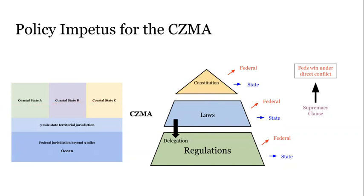It is possible for the federal government to cajole — to create incentives for coastal states to adopt these standards. And indeed, we find these very mechanisms of carrots contained in the CZMA as a means of getting coastal states to adopt federal standards. Two of these carrots — federal funding and federal consistency — are main topics of our conversation regarding the CZMA itself.